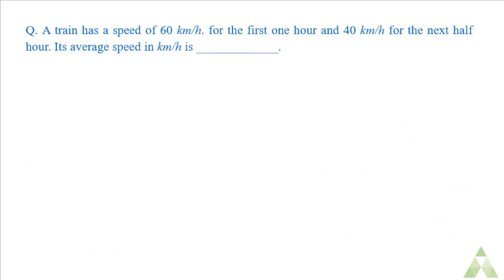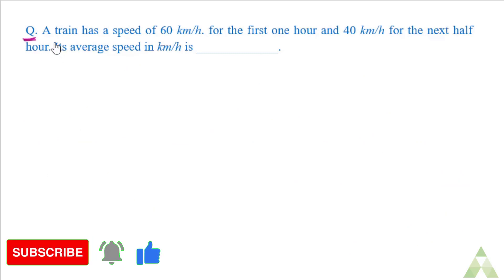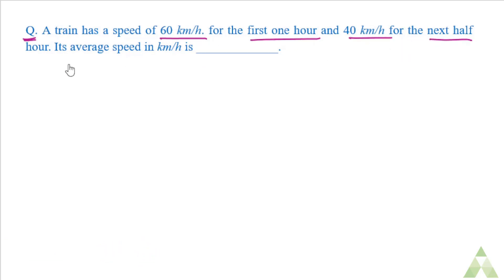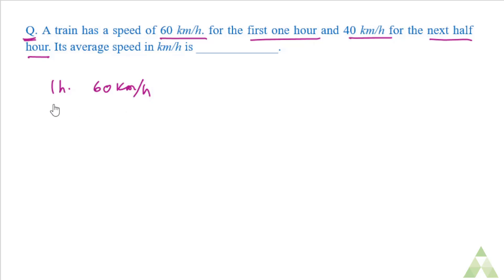Now let us see another example. A train has a speed of 60 km per hour for the first one hour and 40 km per hour for the next half an hour. What is the average speed in km per hour? In the first one hour, the speed is 60 km/h, so distance traveled equals speed into time, which is 60 km.